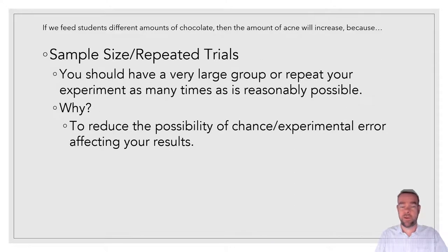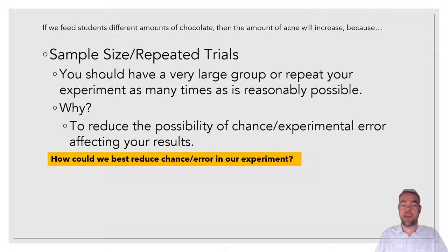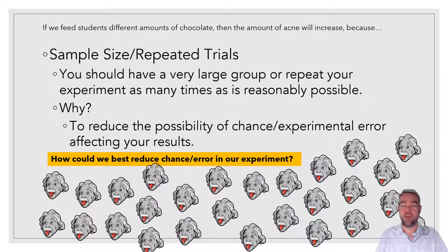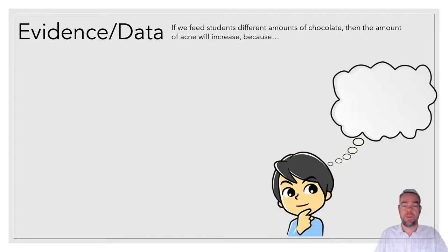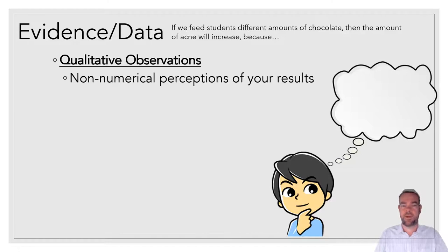So you also want to, like I said earlier, have a huge sample size. You want as many people as you can get in your experiment. Or you want to repeat your experiment multiple times. So in this case, how could we reduce our error? We could not just have one person, we could have a bunch of people. All right. So we've done our experiment. We had 30,000 people. We fed them chocolate. We measured the amount of acne they got.